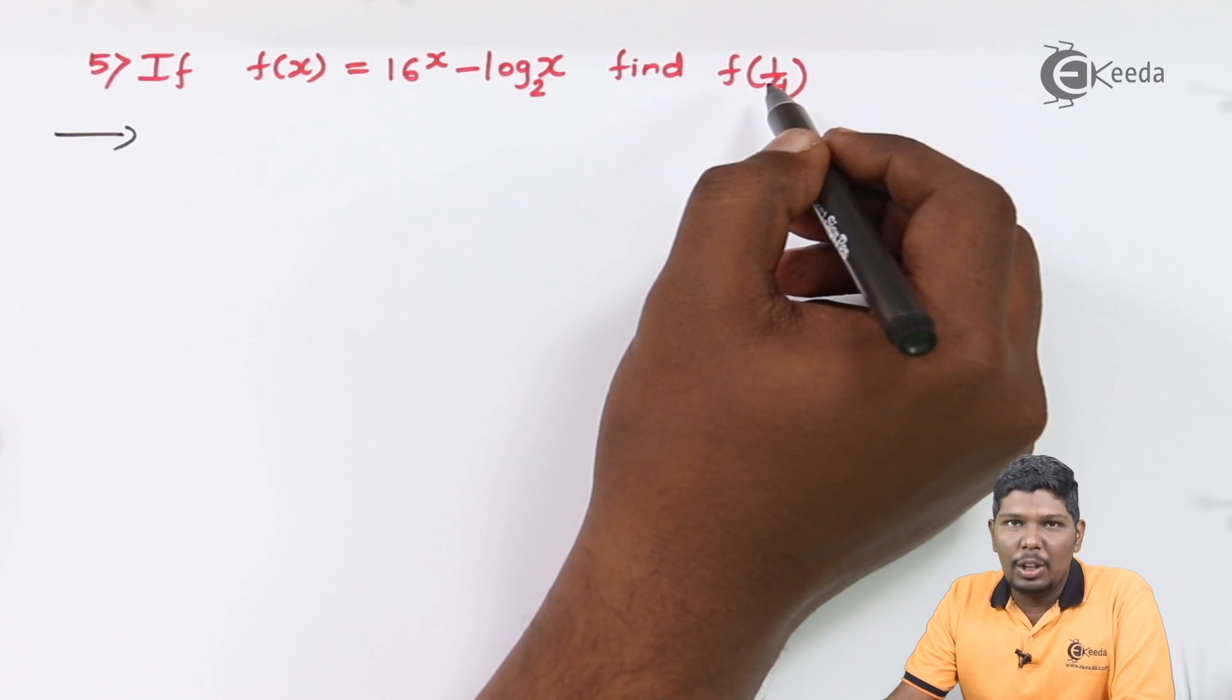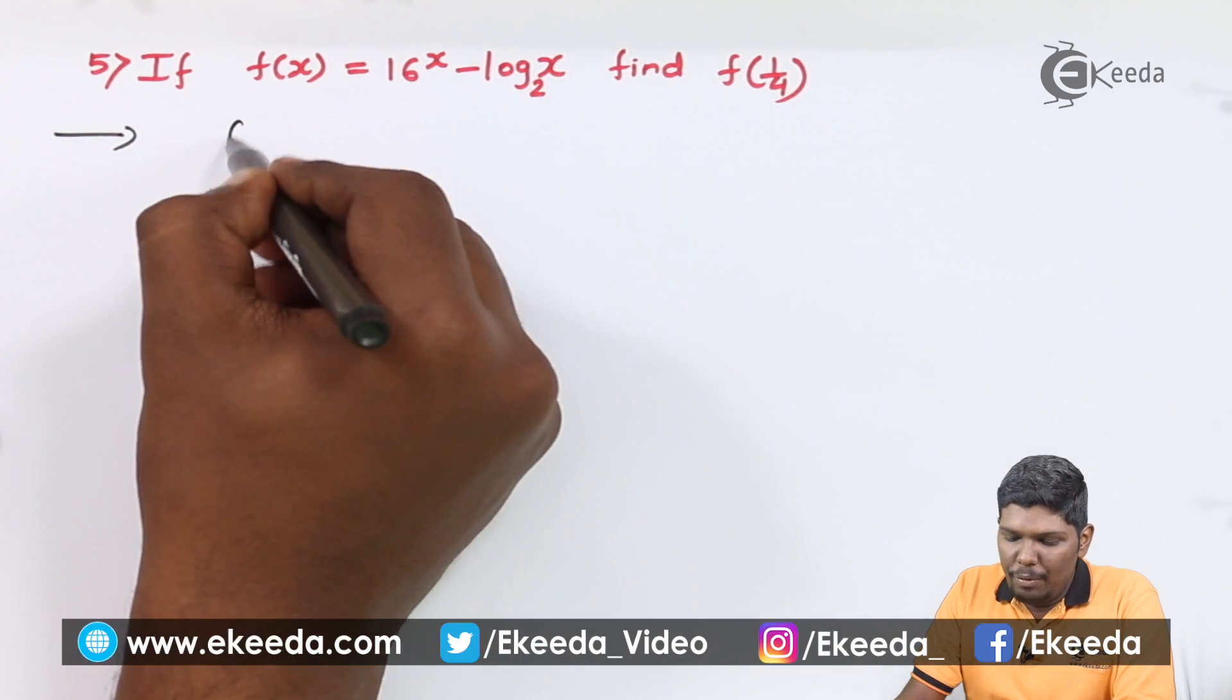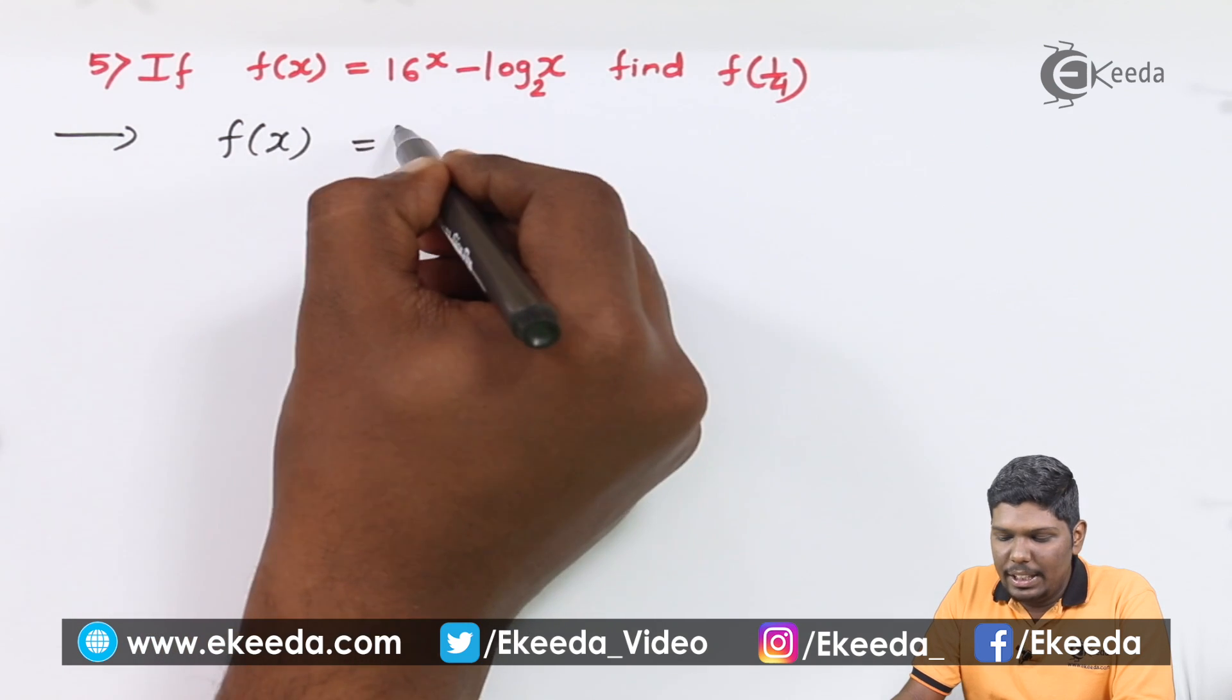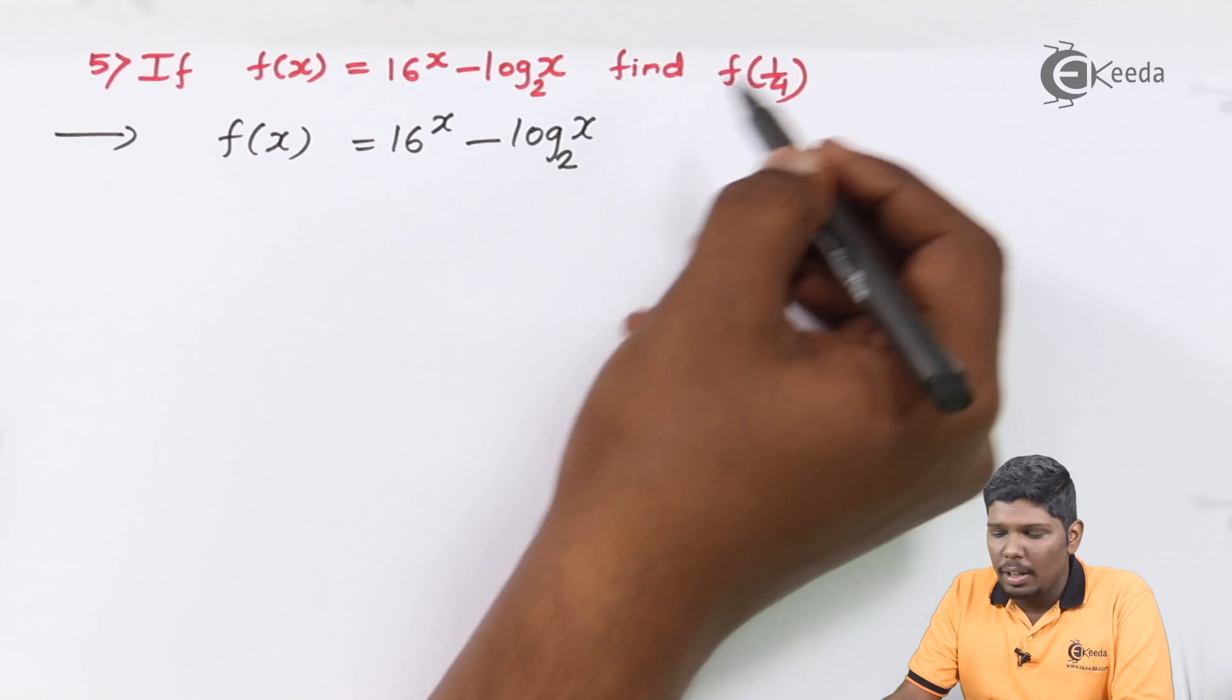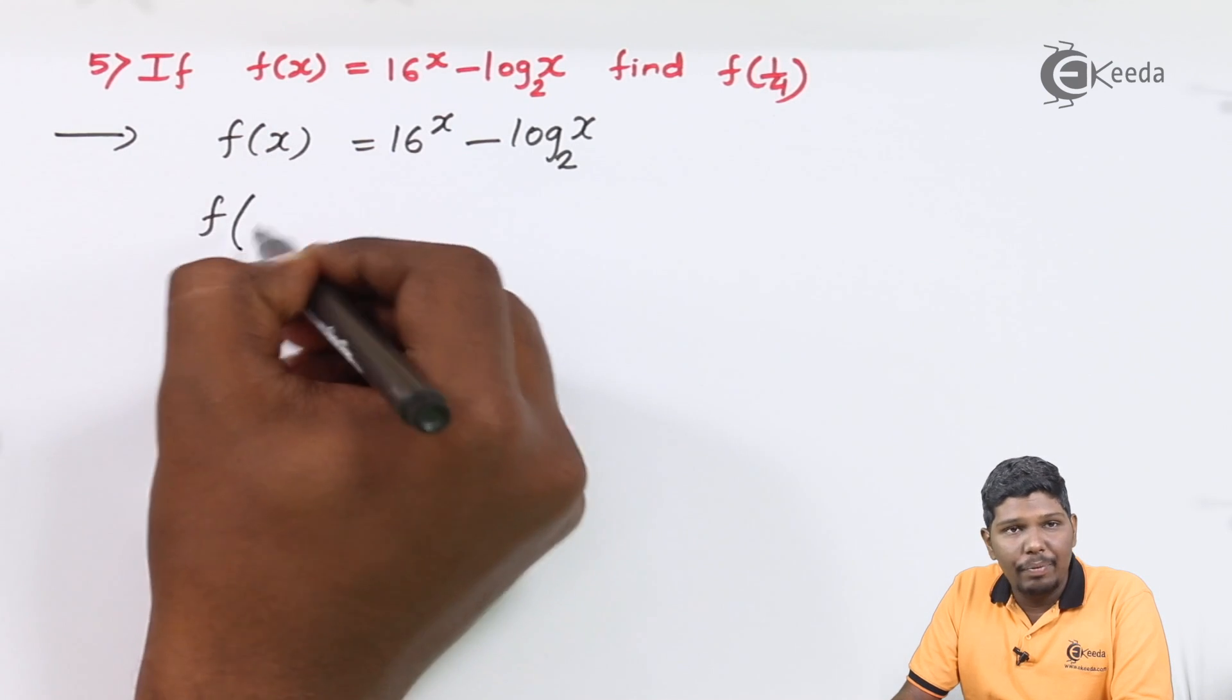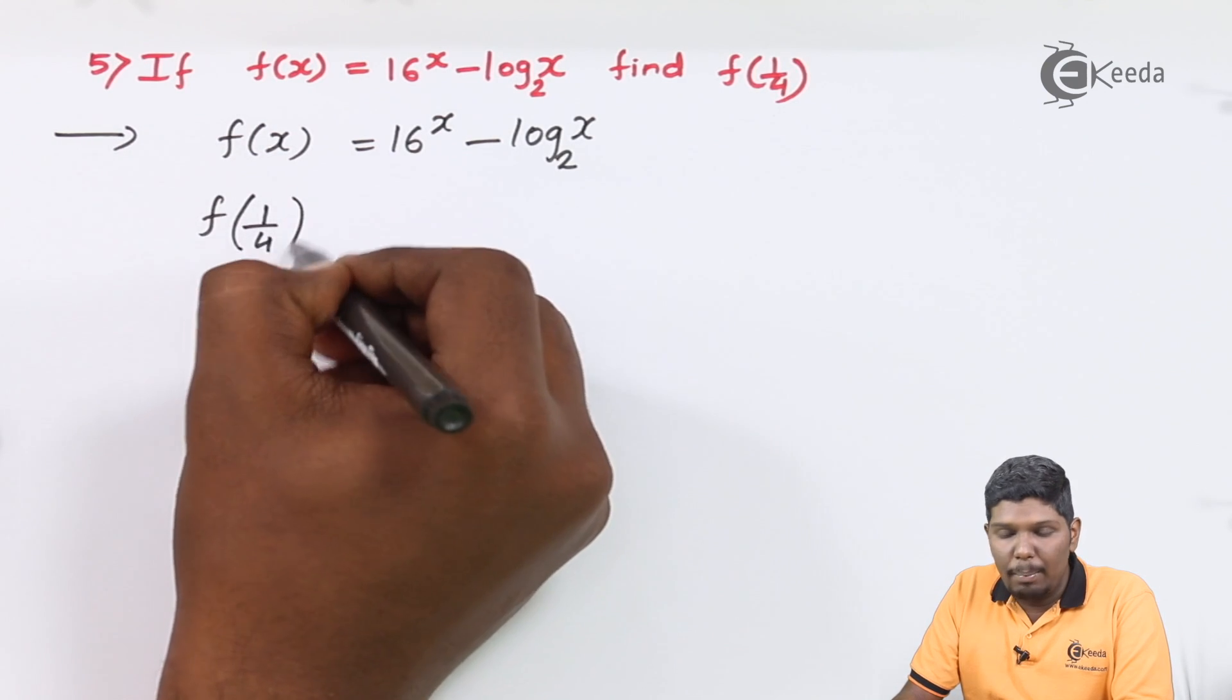The same problem we have done in last two videos. So f(x) goes 16 raised to x minus log x to the base 2. The procedure remains same, we will replace x by 1 by 4.